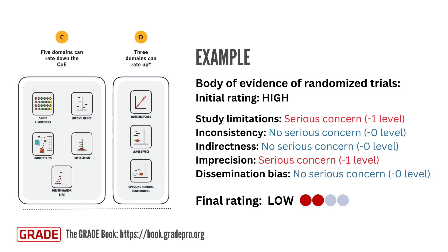For example, imagine we're assessing a body of evidence for a specific outcome based on randomized trials. If there are serious concerns about study limitations and imprecision, GRADE users may decide to rate down the certainty by one level for each domain. Since randomized trials start as high-certainty evidence, rating down by one level for study limitations and another for imprecision would lower the certainty from high to low. Thus, the final rating for that outcome would be low.